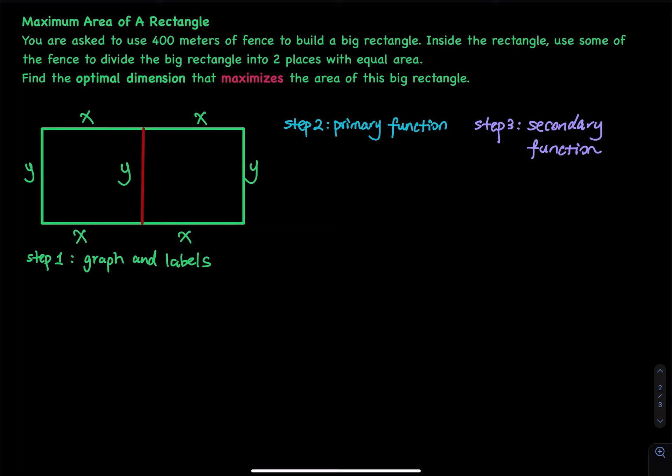The first step is you have to draw a graph. Make sure your graph is nice and big, and make sure you label everything. Step two is you have to write a primary function. What is the primary? The job is maximum area, so what is area? Area of this big rectangle is length times width, so area is equal to 2x times y.